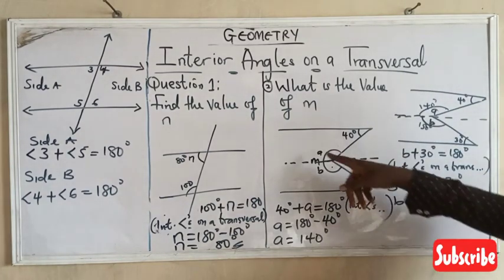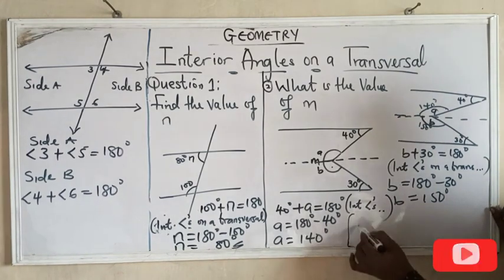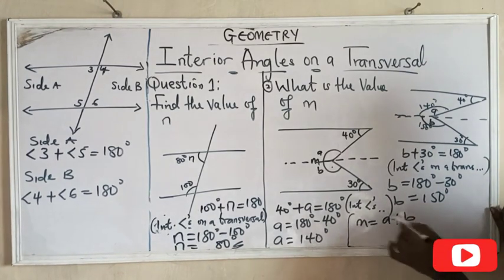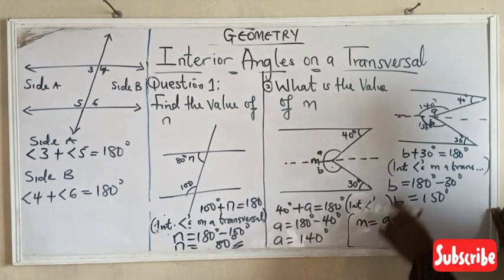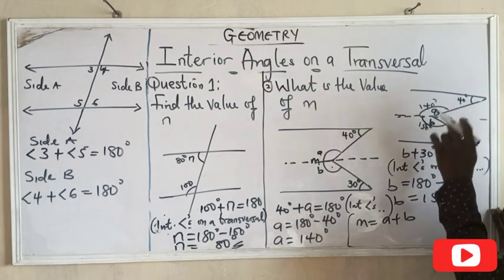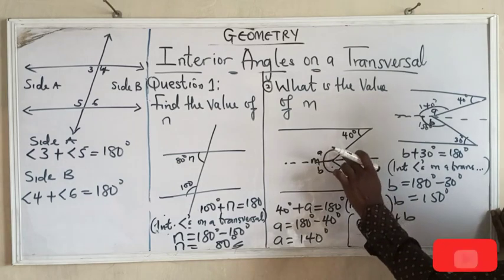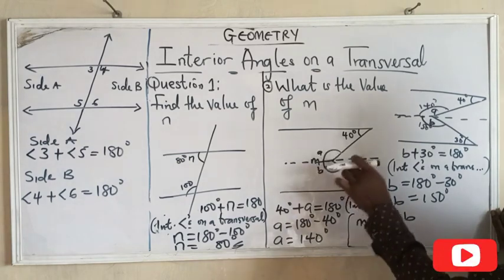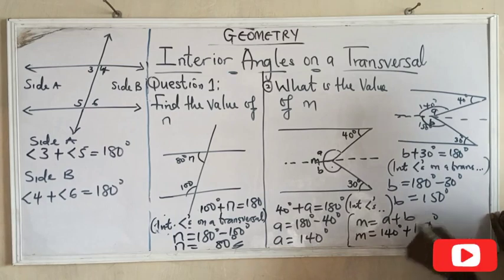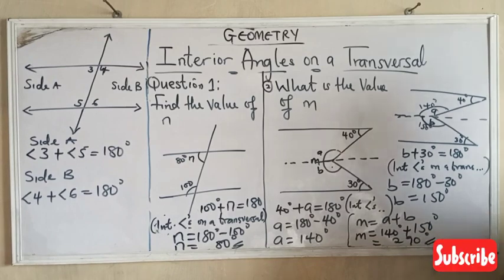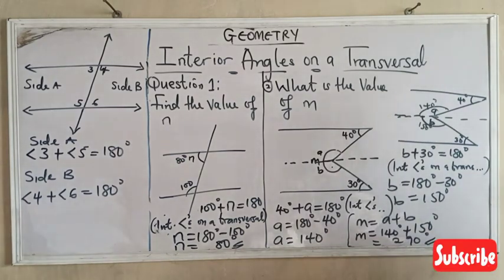But the question is now asking us to find the value of my m, and the value of m is m equals a plus b. Let's not forget that from the original question it is m, and I split it and divided it into a and b. So our m equals a plus b. My a is 140 degrees plus my b, 150 degrees. And if I add them together, I will have 290 degrees as my answer. So that's that for that.